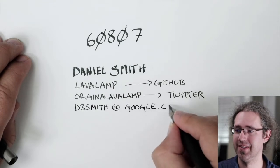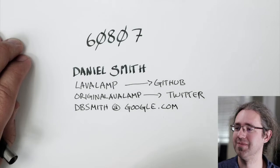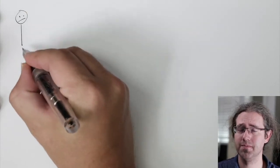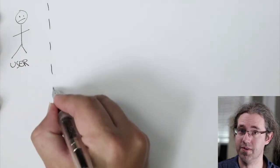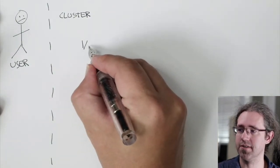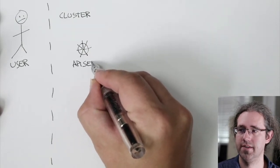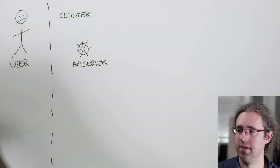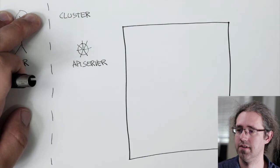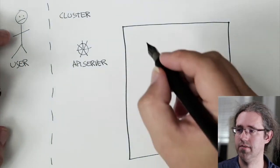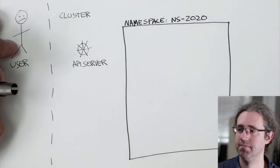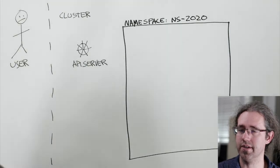I have RoboDaniel drawing my slides today. It turns out I can't draw and talk at the same time, so we're doing this in two steps. The story begins with a user — you won't be surprised that there's also a Kubernetes cluster in this story, and every cluster needs an API server. Of particular concern in our story today is the namespace. We'll call it ms2020, because this user would like to delete this namespace.